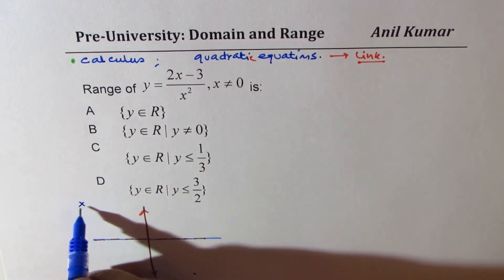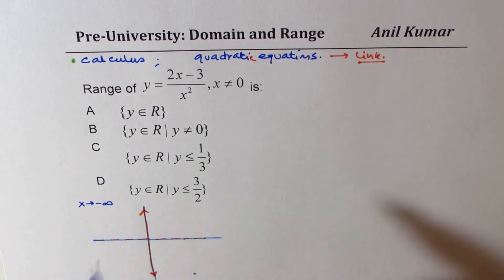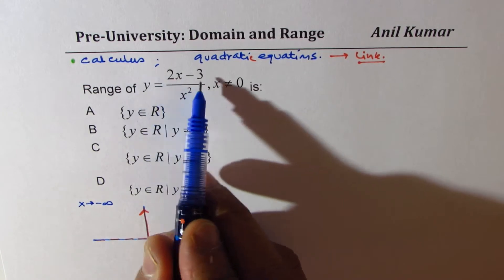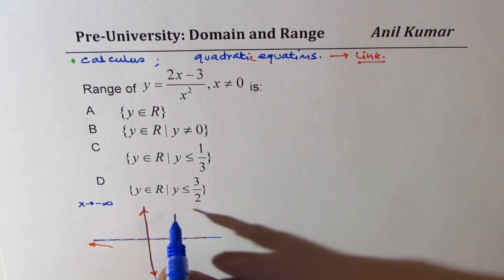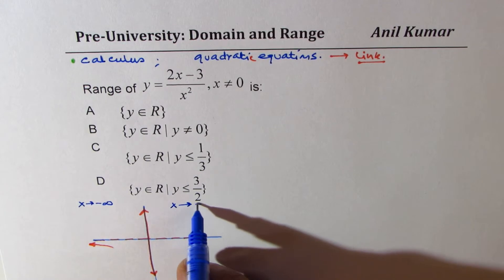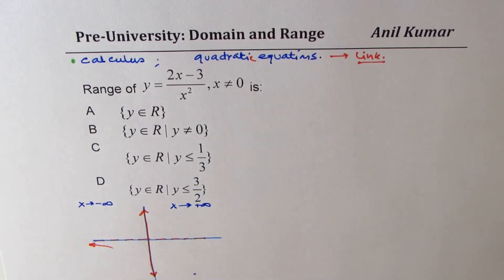If x approaches negative infinity, in that case, numerator is going to be negative, denominator is positive. So the function will approach from the bottom. However, if x approaches positive infinity, in that case, the y value will approach from the top. This is one thing very clear.